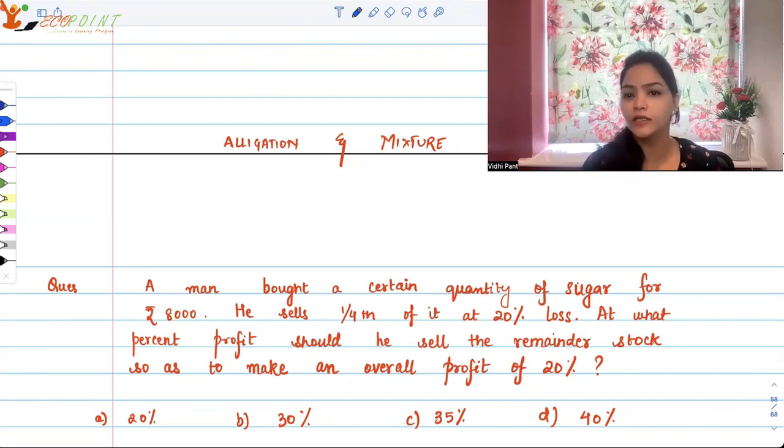A man bought a certain quantity of sugar for Rs 8,000. He sells one-fourth of it at 20% loss. At what percent profit should he sell the remainder stock so as to make an overall profit of 20%?